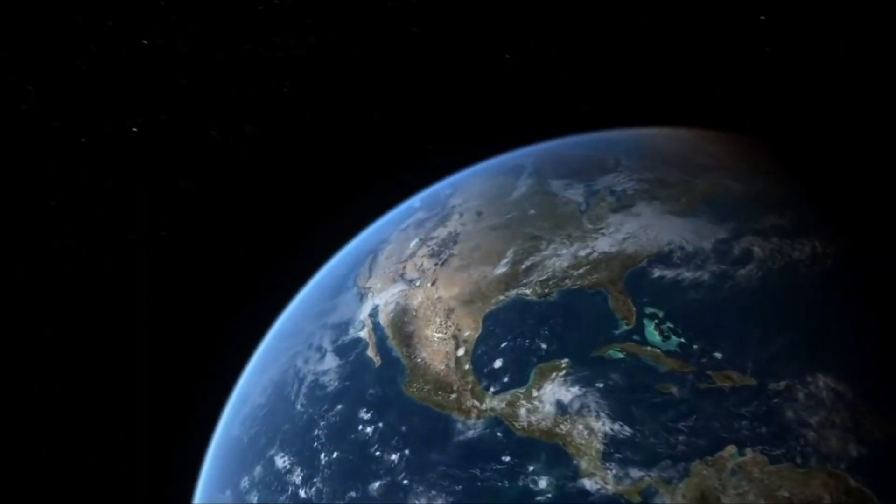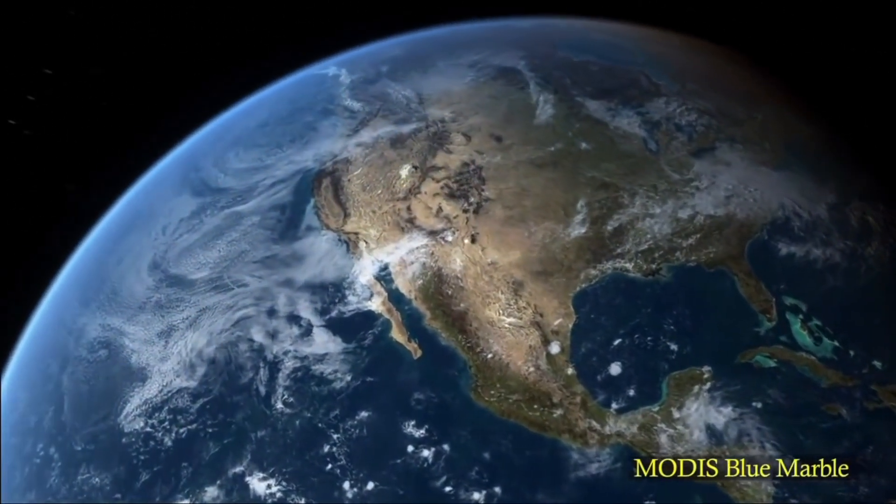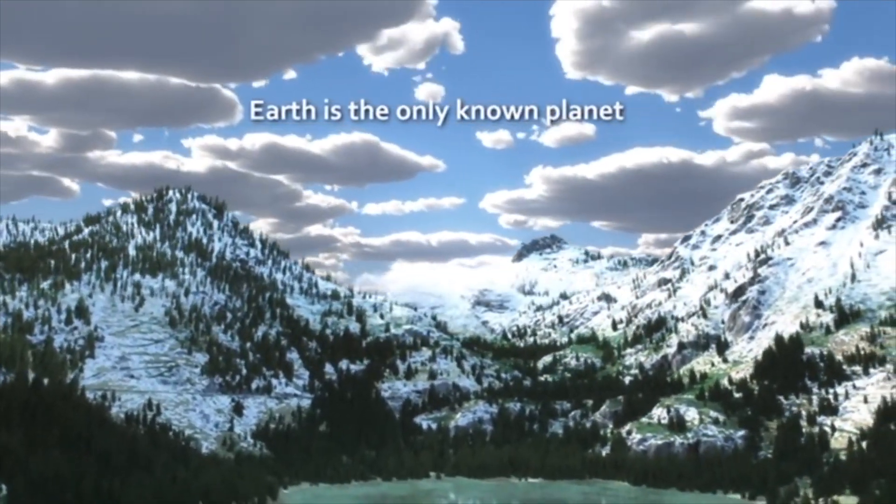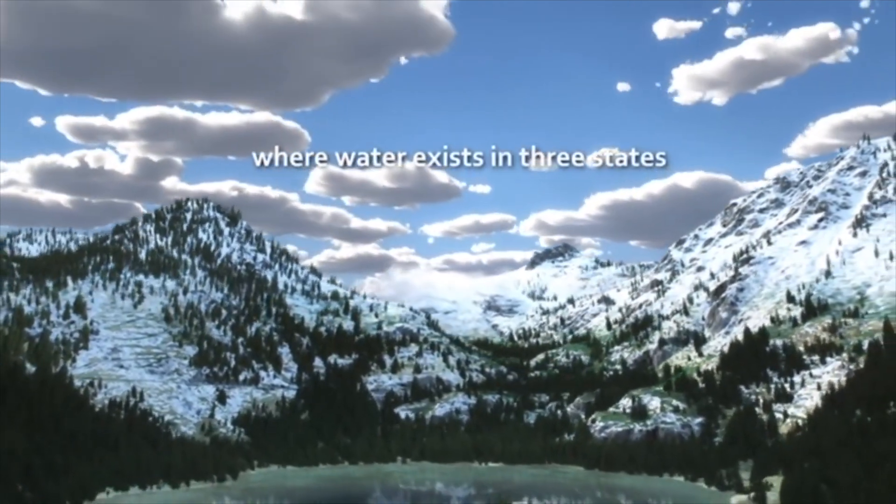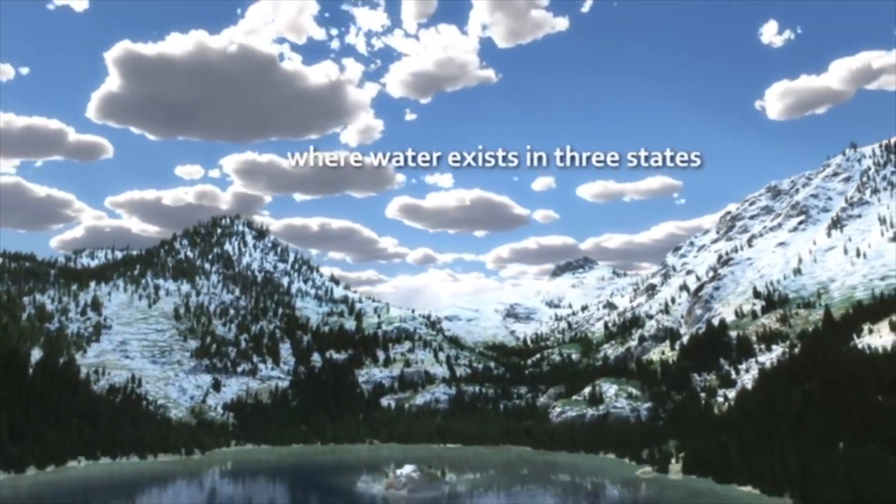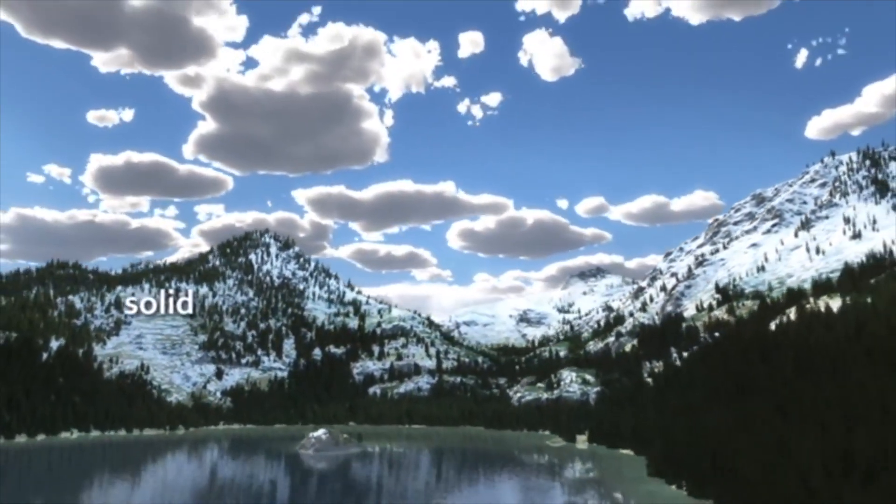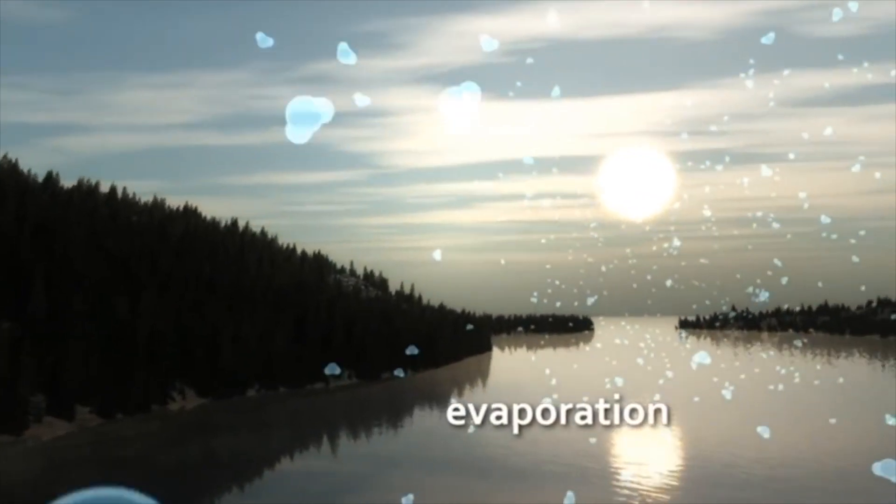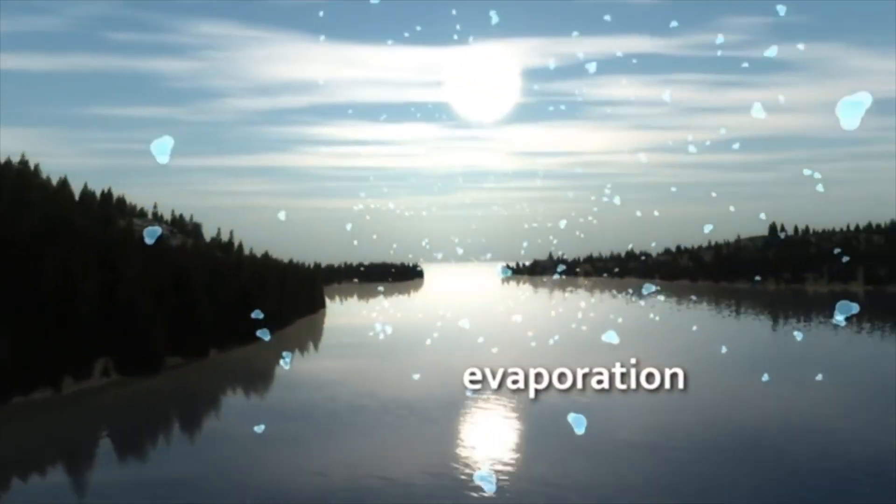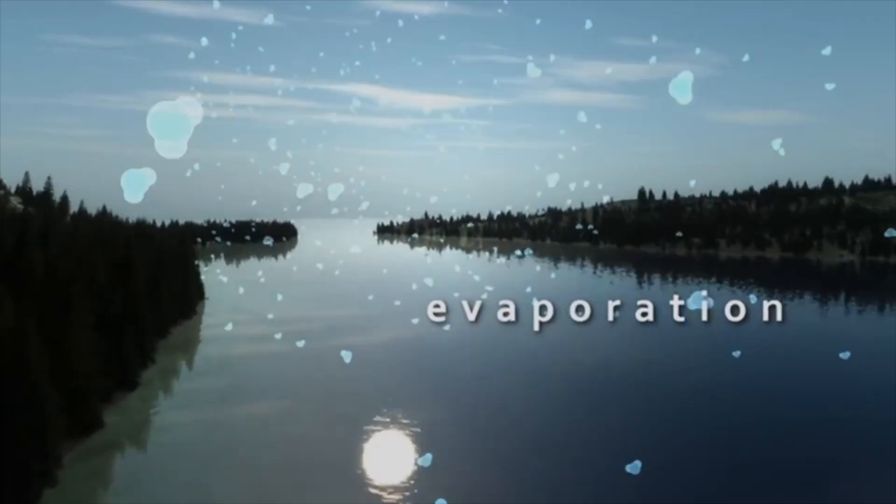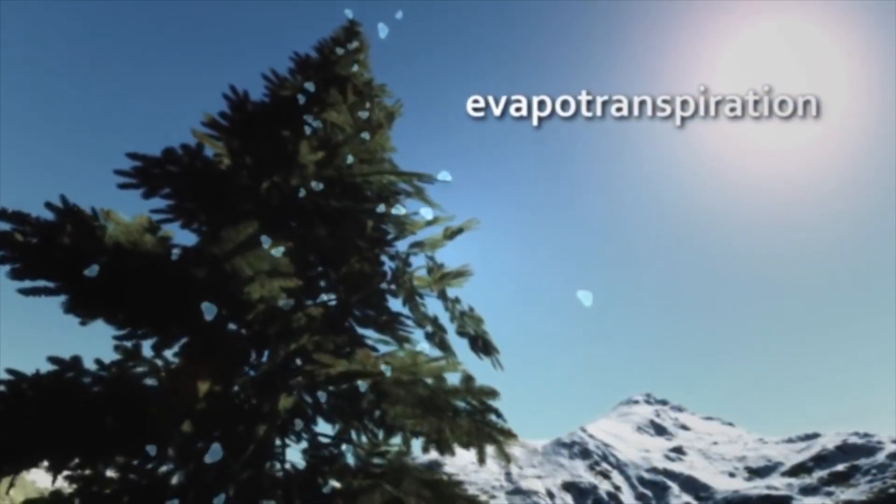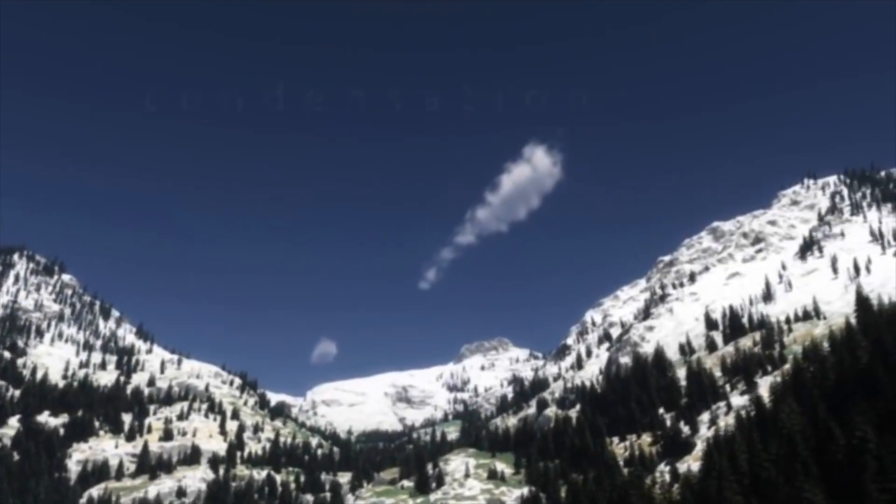Earth's water is always in movement, and the natural water cycle describes the continuous movement of water on, above, and below the surface of the Earth. Water is always changing states between liquid, vapor, and ice. These processes are happening in the blink of an eye and over millions of years. So let's learn some splashing news facts about the different stages of the wonderful water cycle.